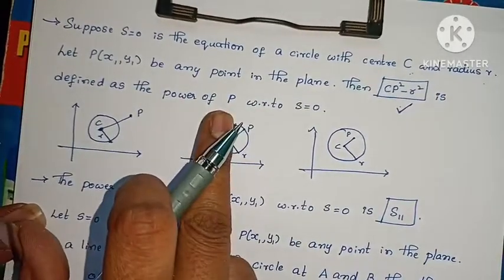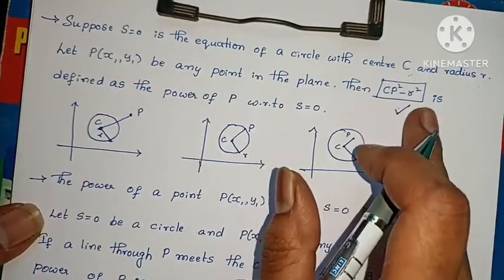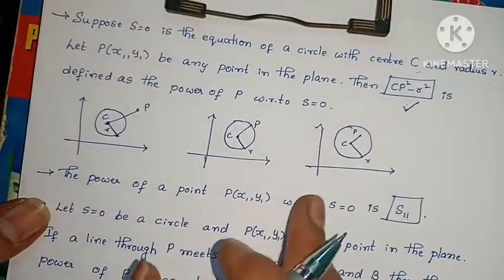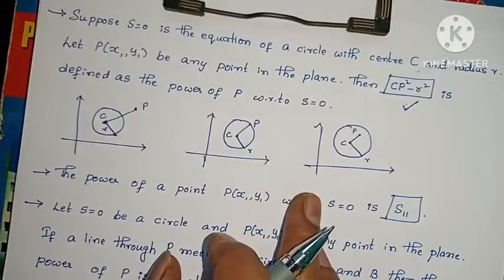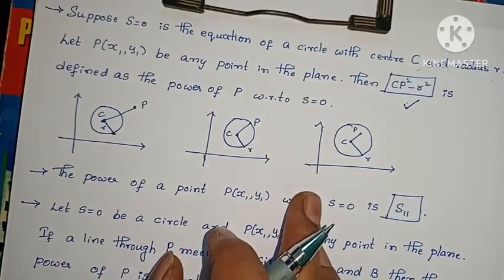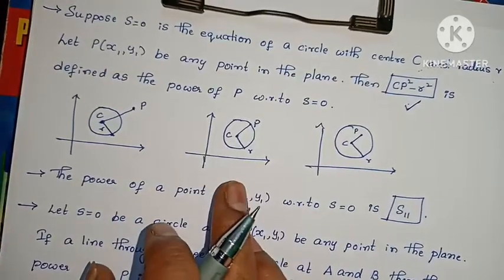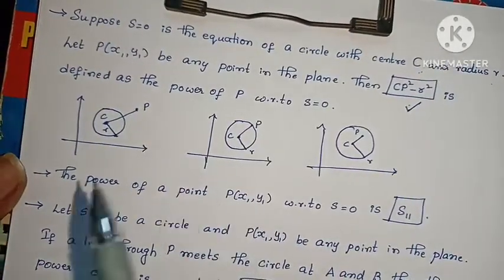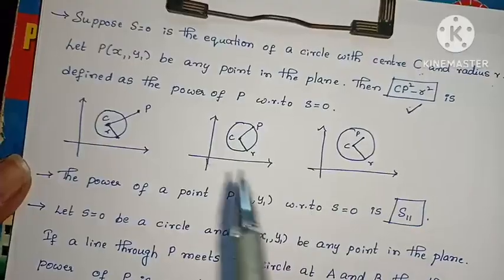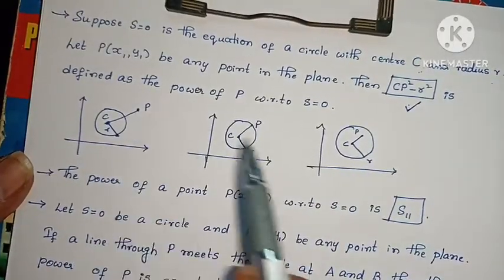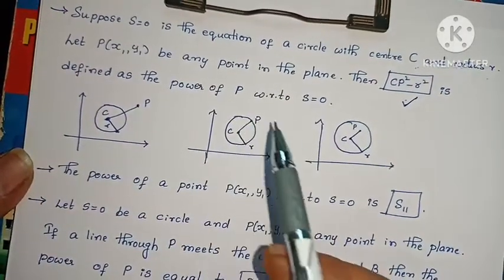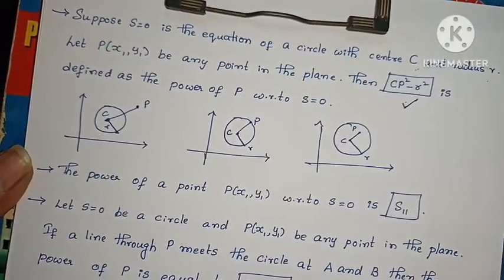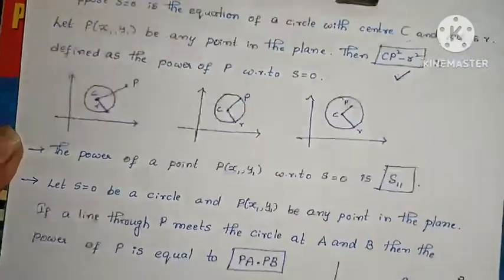Power of P formula is CP squared minus R squared. This value can be positive, negative, or zero. If the value equals 0, the point P is on the circle. If it is negative, P lies in the interior of the circle.